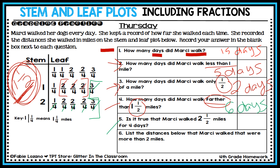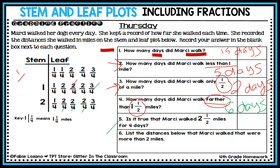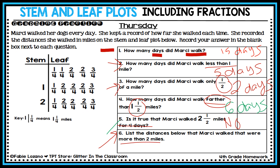Question five: is it true that Marcy walked two and a half miles for four days? Let's look at how many days she walked two and a half miles. Two and two-fourths represents two and a half — I can see it appears on three days, not four. So is that statement true? No, that is not true.